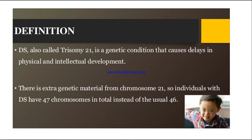Definition: Down syndrome, or DS, is also called Trisomy 21. It is a genetic condition that causes delay in physical and intellectual development. Children born with Down syndrome will have some facial deformity or improper physical development, and also delay in their thinking process and intellectual development.